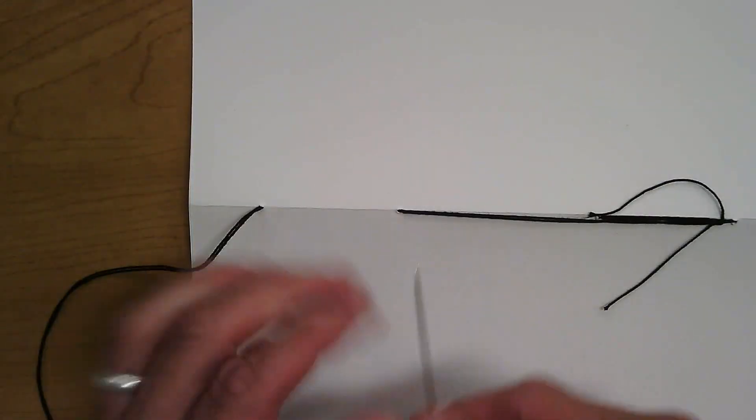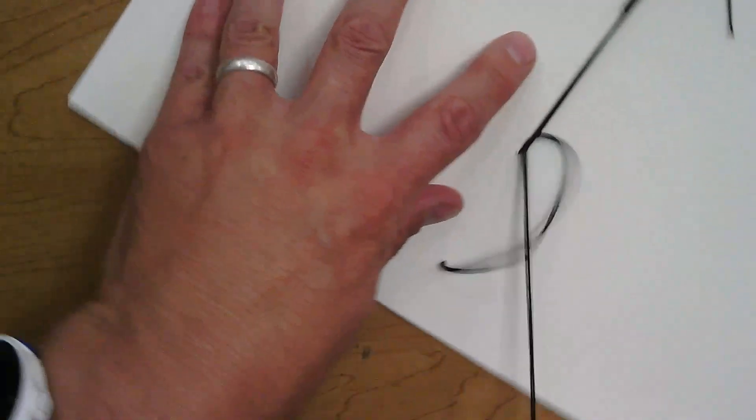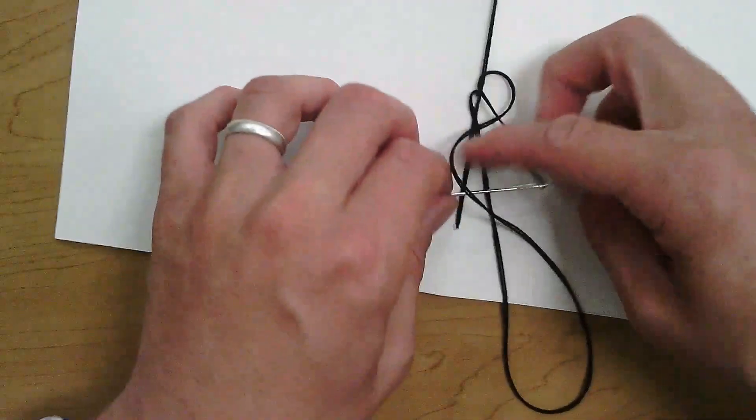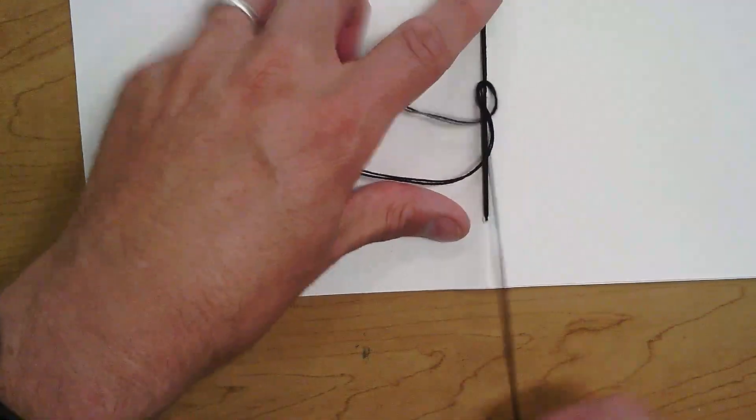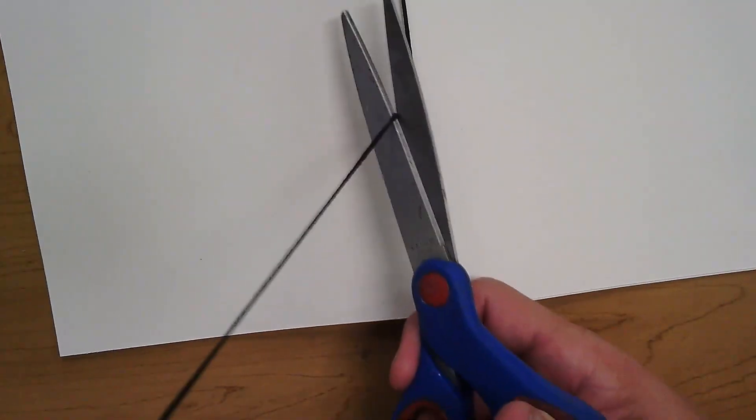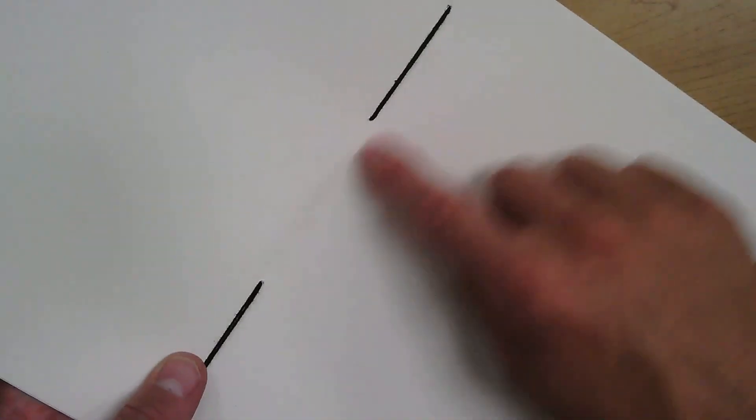We're going to do the same thing we just did—loop it through, and we're just tying it off. We do want to keep this a little tight; we don't want it to be a loose knot. Once I've done that, it's pretty secure. I can cut this off right here. If you really want, you could put another stitch on the inside, but it's not really necessary.